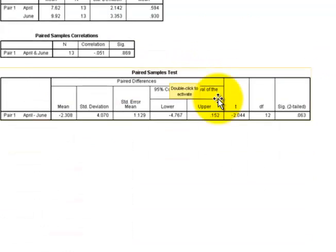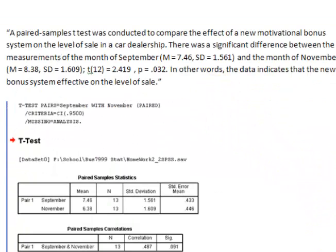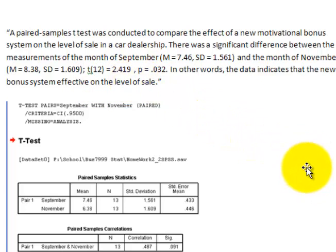And in your second one — the paired t-test — there was a significant difference. So you could have said something like: the data indicated that the new bonus system was effective at increasing the number of car sales. But most of it looks really, really good. So thank you. Hope this helps.